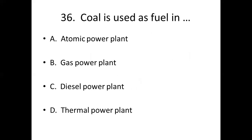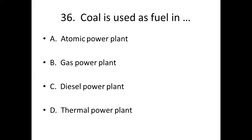36th bit: Coal is used as fuel in dash. Option A: Atomic power plant. Option B: Gas power plant. Option C: Diesel power plant. Option D: Thermal power plant. Answer — Option D: Thermal power plant.